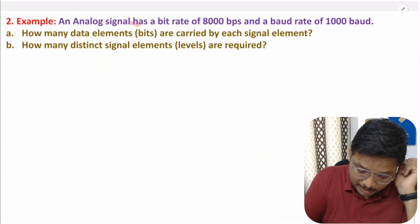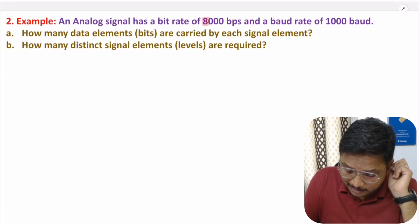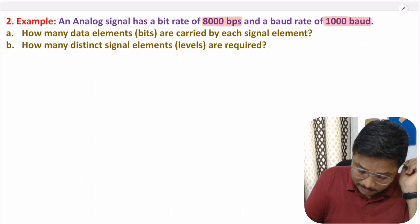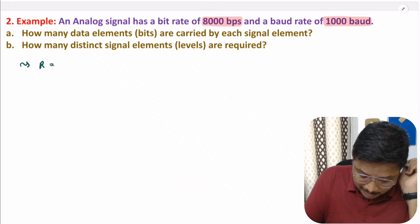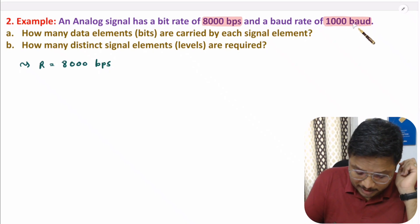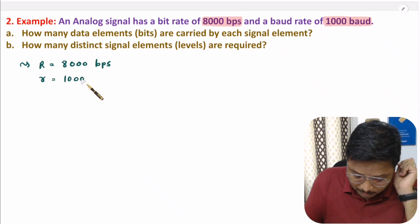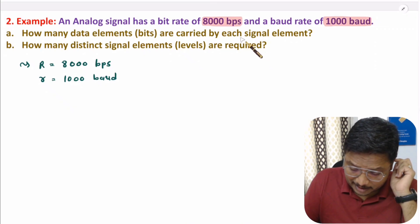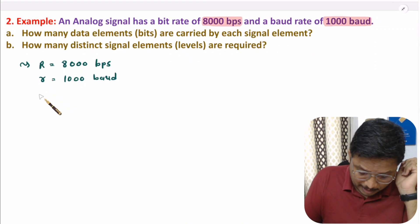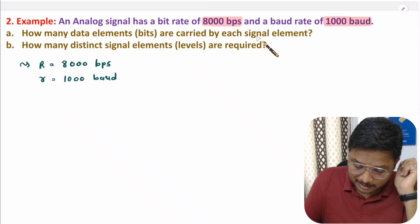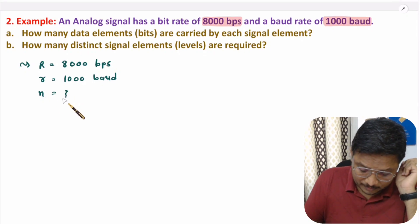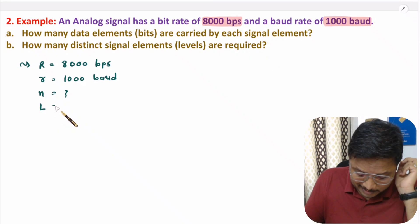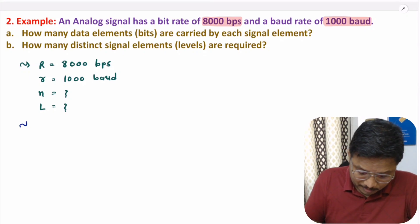In the second question, we have an analog signal with a bit rate of 8000 bps and a baud rate of 1000 baud. The first question asks how many data elements are carried by each signal element — that is, we need to calculate small n. The second question asks how many distinct signal elements are required — we need to find L.